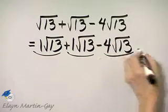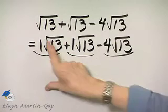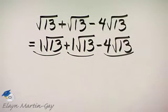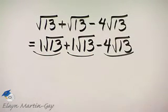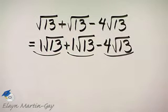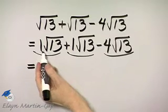Notice these are like radicals. The index each time is an understood 2 and the radicand each time is 13. So we simply need to perform these operations on the coefficients.